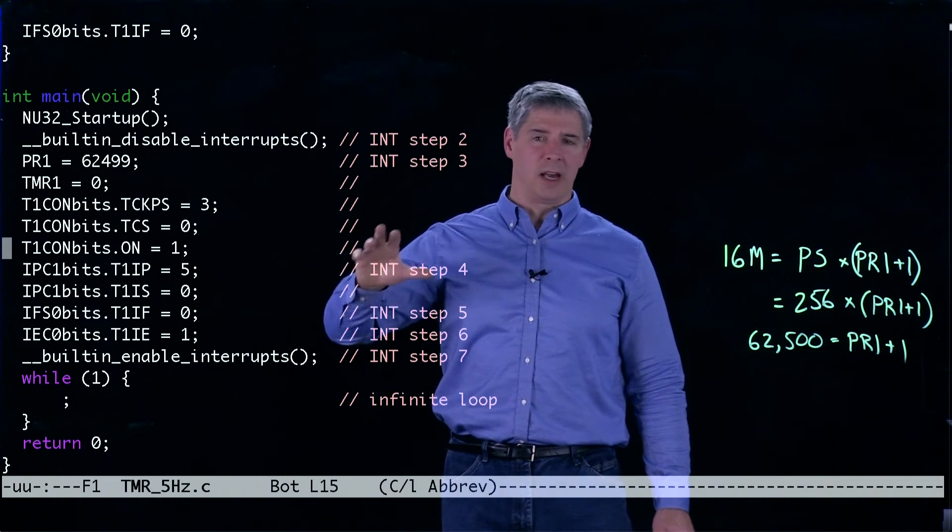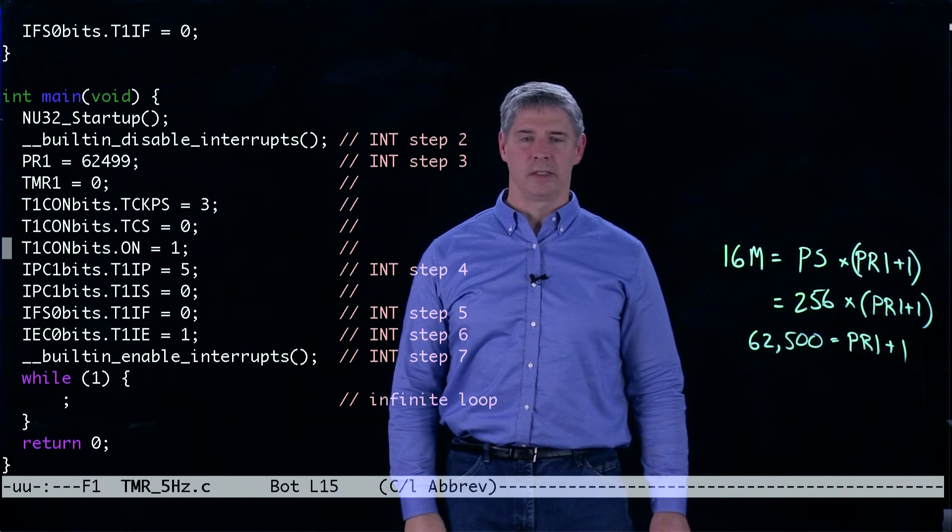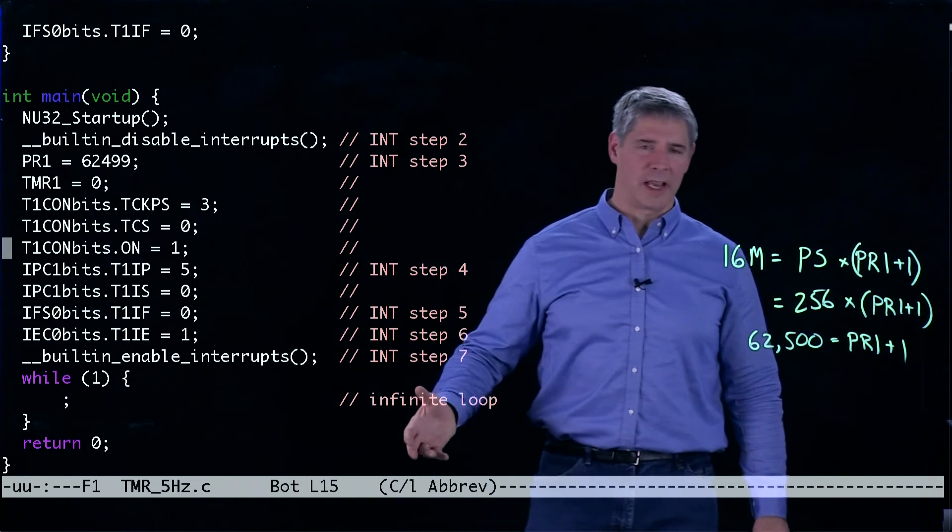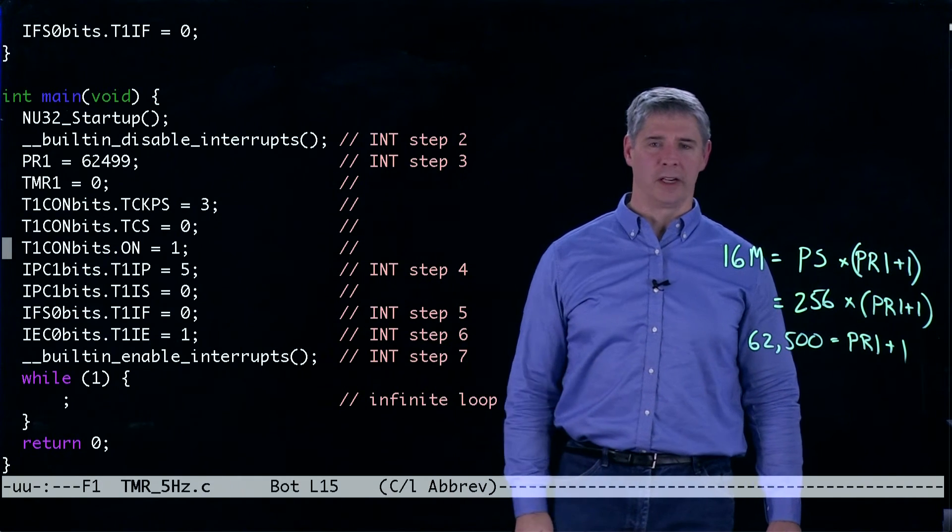This is where we're setting up timer1 to generate the interrupt. We're going to set the value of timer1 to 0, so it starts counting from 0 and then goes up to 62,499.